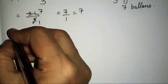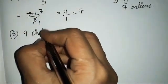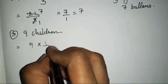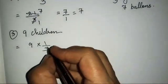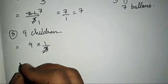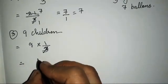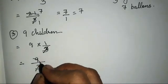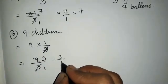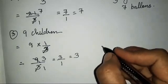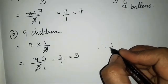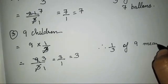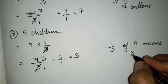For 9 children, we calculate 9 × 1/3. So 9×1 = 9/3. Then 3×3 = 9, giving 3/1 = 3. Therefore, 1/3 of 9 children is 3 children.